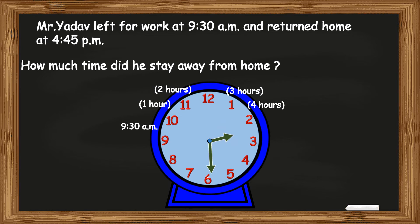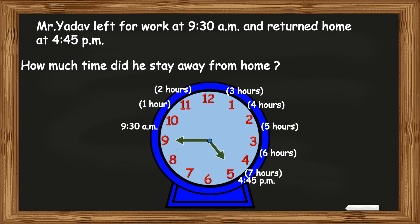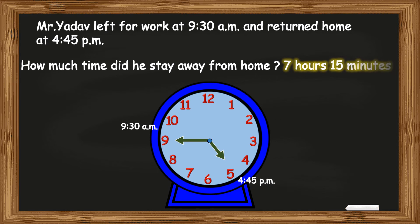By 2:30 p.m. it was 5 hours. By 3:30 p.m. it was 6 hours. And by 4:30 p.m. it was 7 hours. He returned home at 4:45 p.m., which means 15 minutes more. So we can say that Mr. Yadav returned home after 7 hours 15 minutes, meaning he was away from home for a duration of 7 hours 15 minutes.